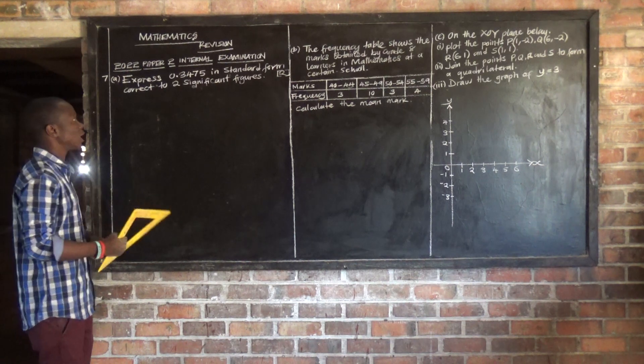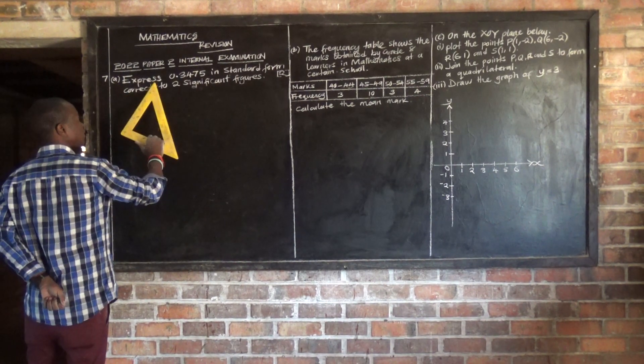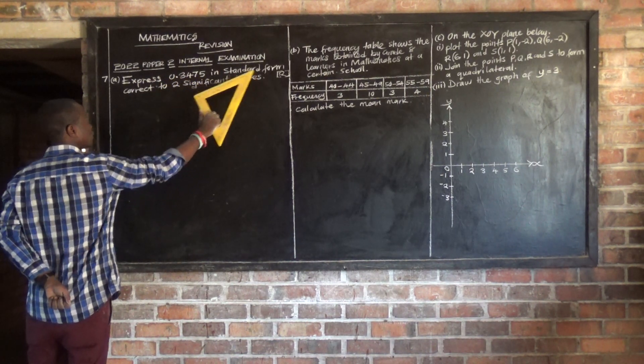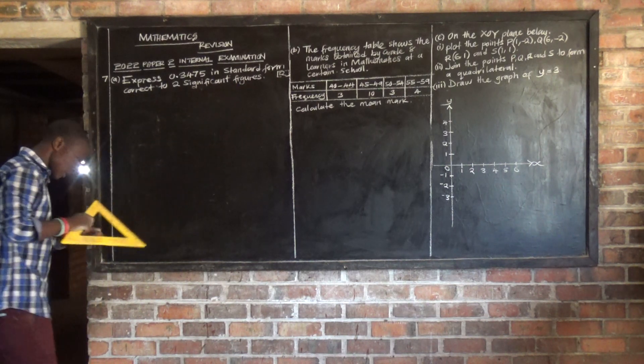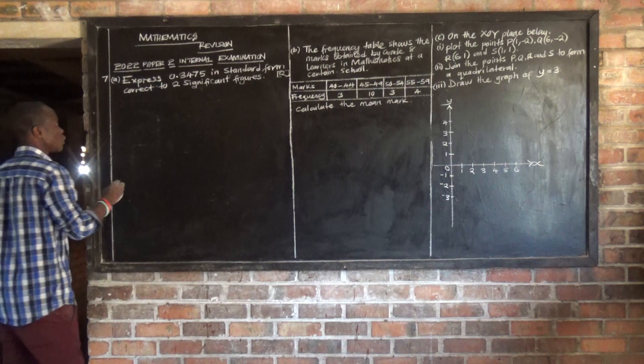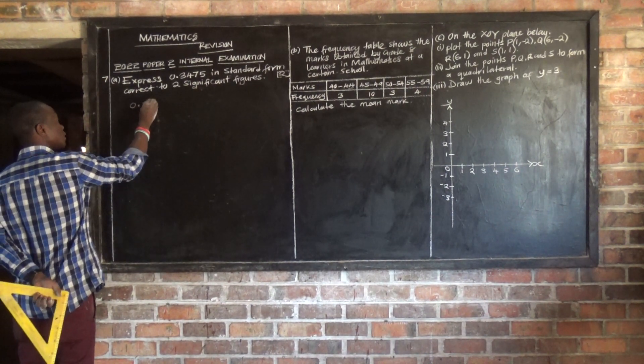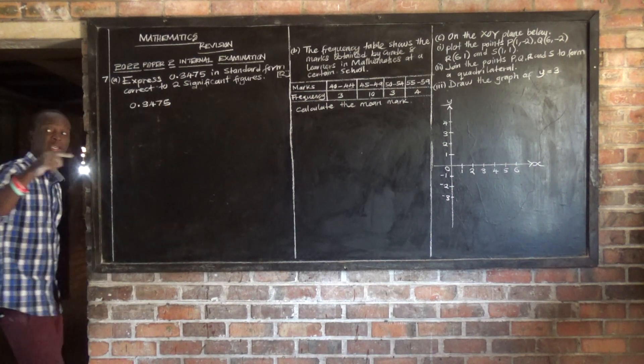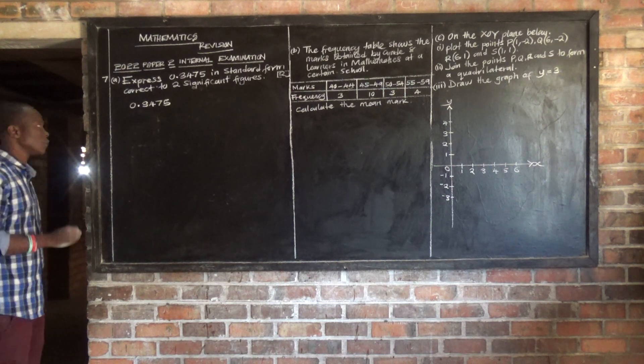Part A is a question on approximations. It's saying express 0.3475 in standard form, correct to two significant figures. So we have given this number 0.3475. Now we are told to express or to write this number in standard form.